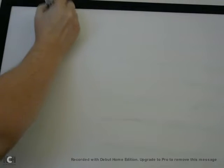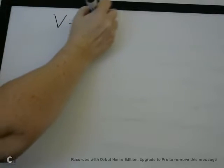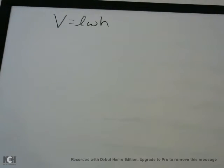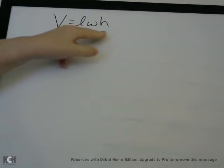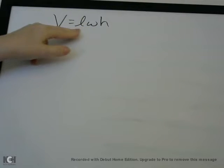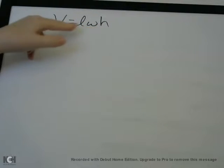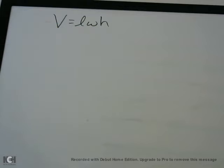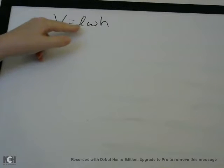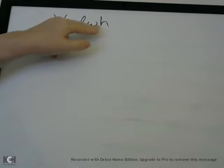All the units for volume problems will be in cubic units. So if you see a problem where the answers are cubic, you know you're doing a volume problem. If you look on your formula sheet, you will see the formula for the volume of a rectangular prism. It's V equals LWH — volume equals length times width times height. When you have three variables next to each other, that means multiplication.